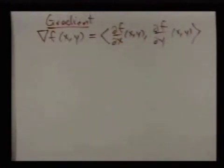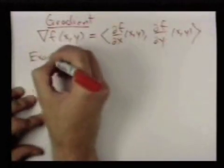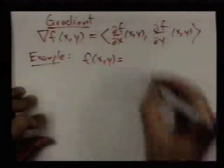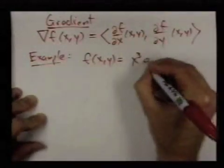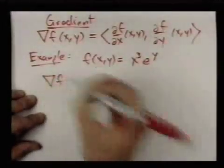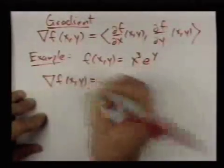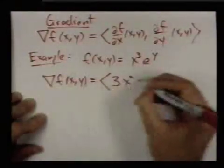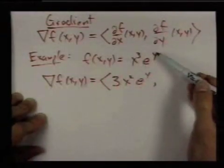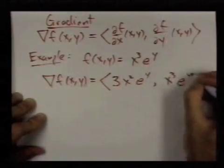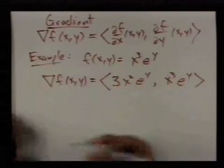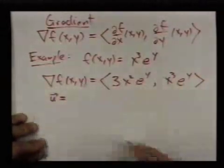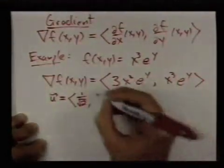If F(x,y) = x³eʸ, the gradient is ⟨∂f/∂x, ∂f/∂y⟩ = ⟨3x²eʸ, x³eʸ⟩. That's the gradient in this example. Now, if I want to do something very specific, let's say I want to find the directional derivative in the direction of a unit vector.